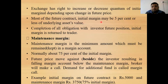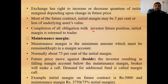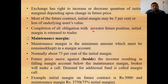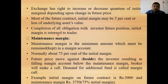For most futures contracts, the initial margin may be 5% or less of the underlying asset value. Upon completion of all obligations, the initial margin is returned to the trader. Since there are two parties — A and B — who have entered into the futures contract, the invested values will be adjusted and returned to the trader at the time of delivery.